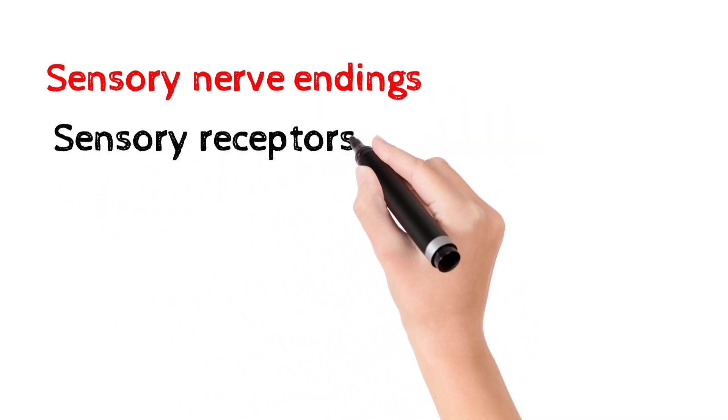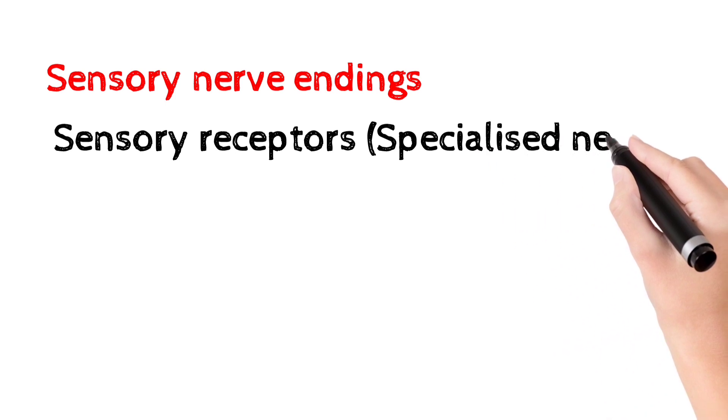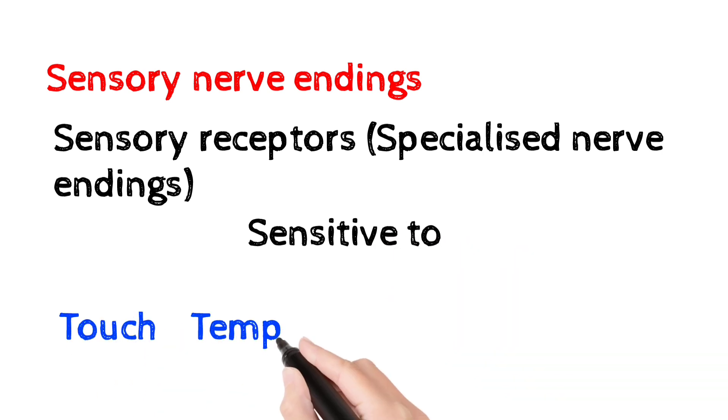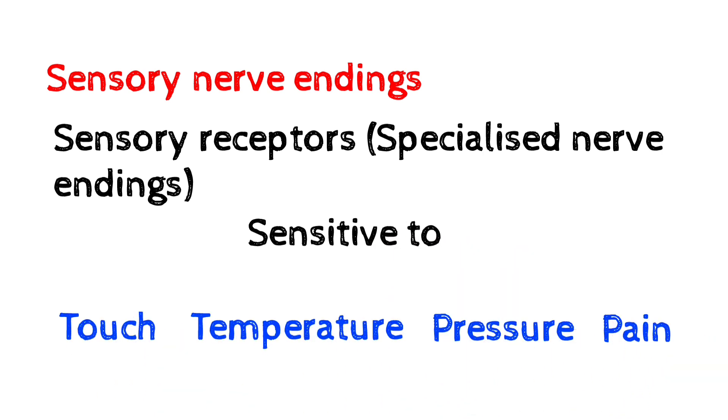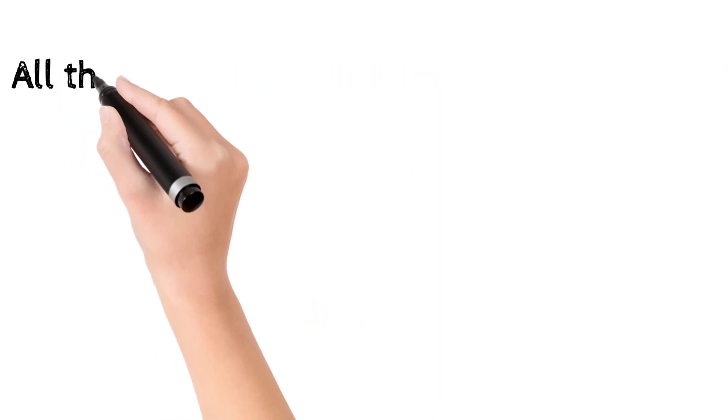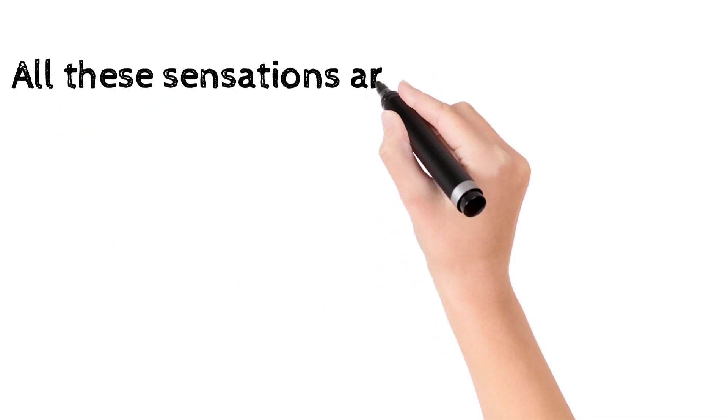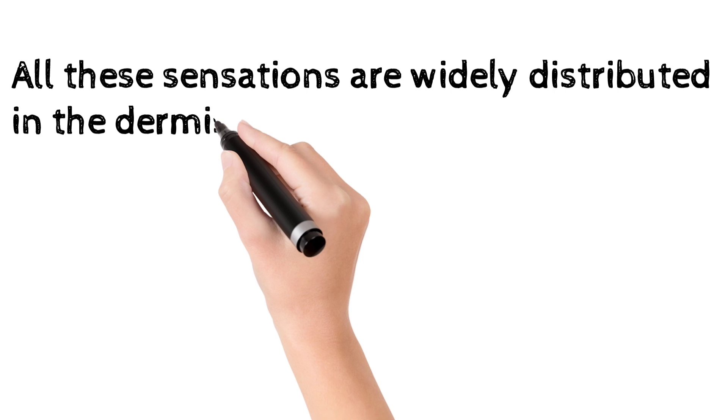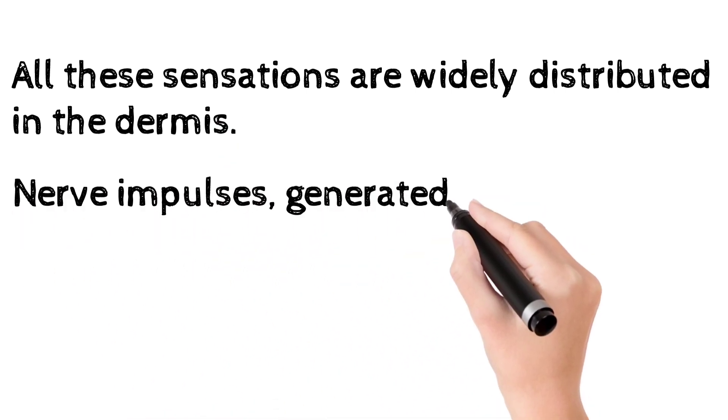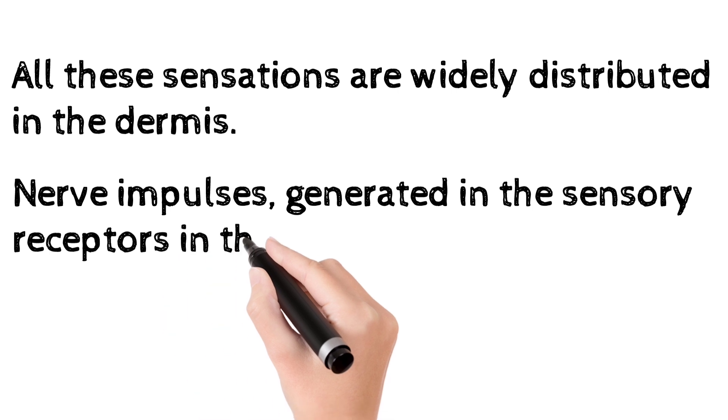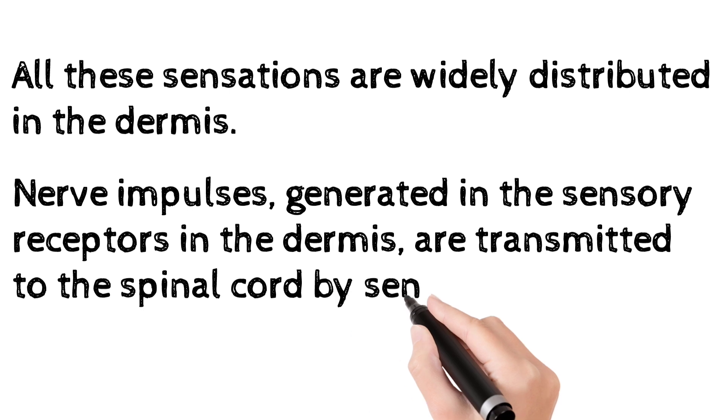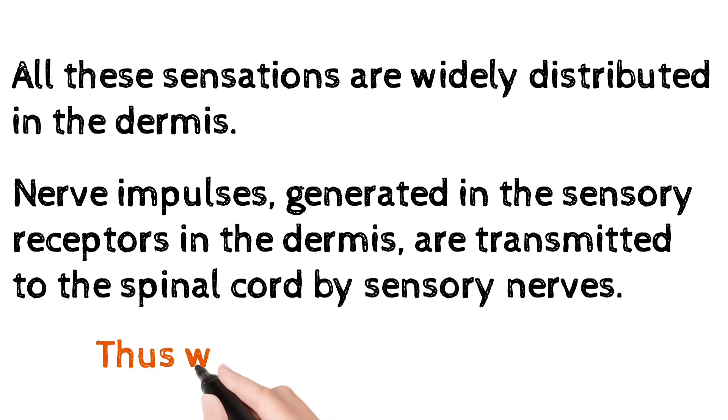Sensory receptors are specialized nerve endings that are sensitive to touch, temperature, pressure, and pain. These sensations are widely distributed in the dermis. Nerve impulses generated through sensory receptors in the dermis are transmitted to the spinal cord via sensory nerves, creating the sensation.